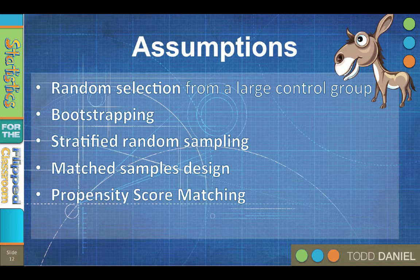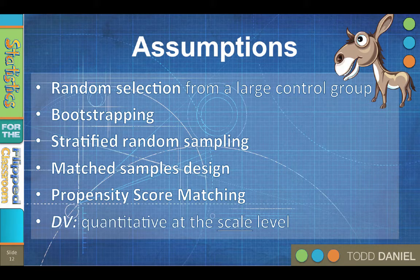A fourth assumption of the independent samples t-test that cannot be violated, is that the dependent variable must be at the scale level. The dependent variable must be measuring something. It's quantitative.